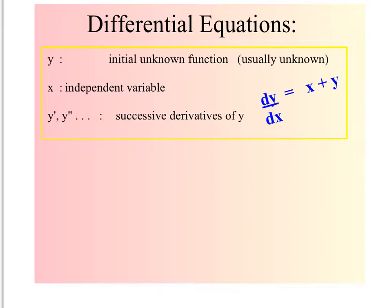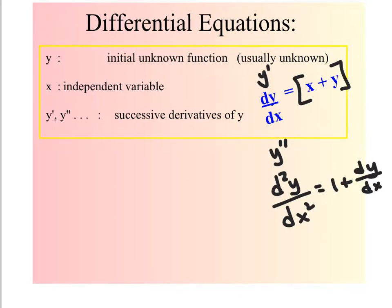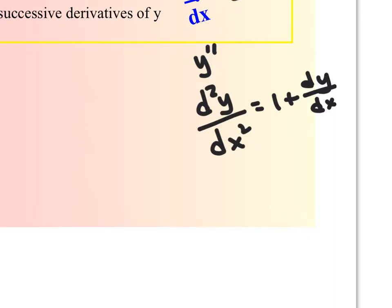x is an independent variable. And we can take successive derivatives of y. So this would be technically the first derivative of y. If I wanted the second derivative of y, which we'd call d²y/dx², I would take the derivative of this with respect to x, which would be 1 plus dy/dx.